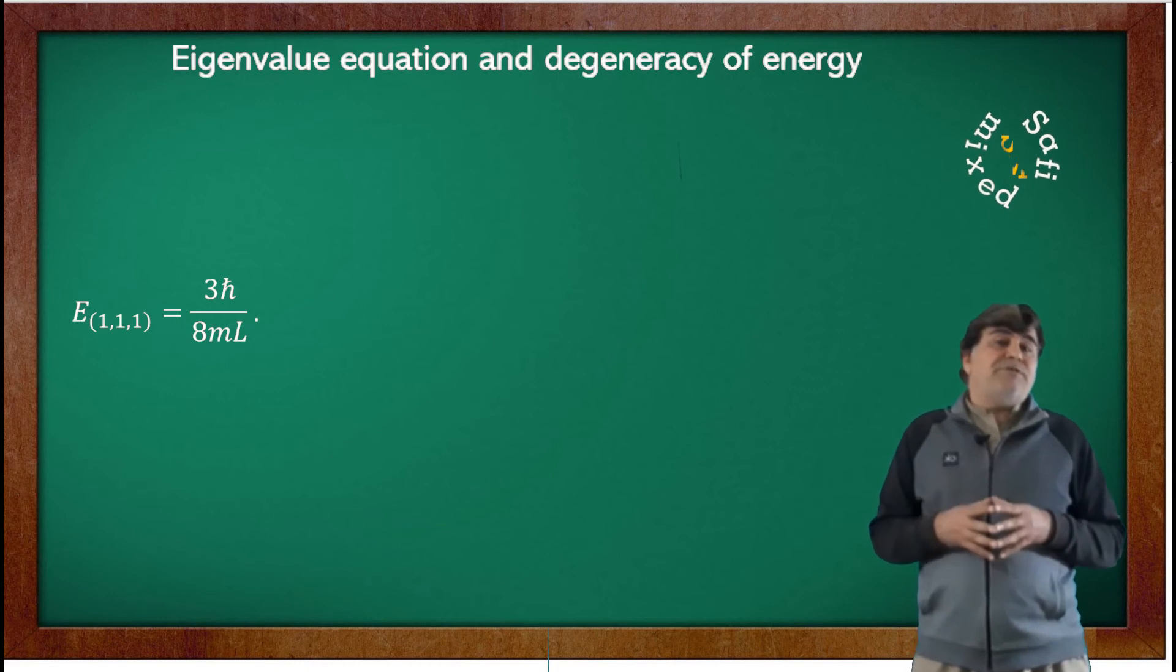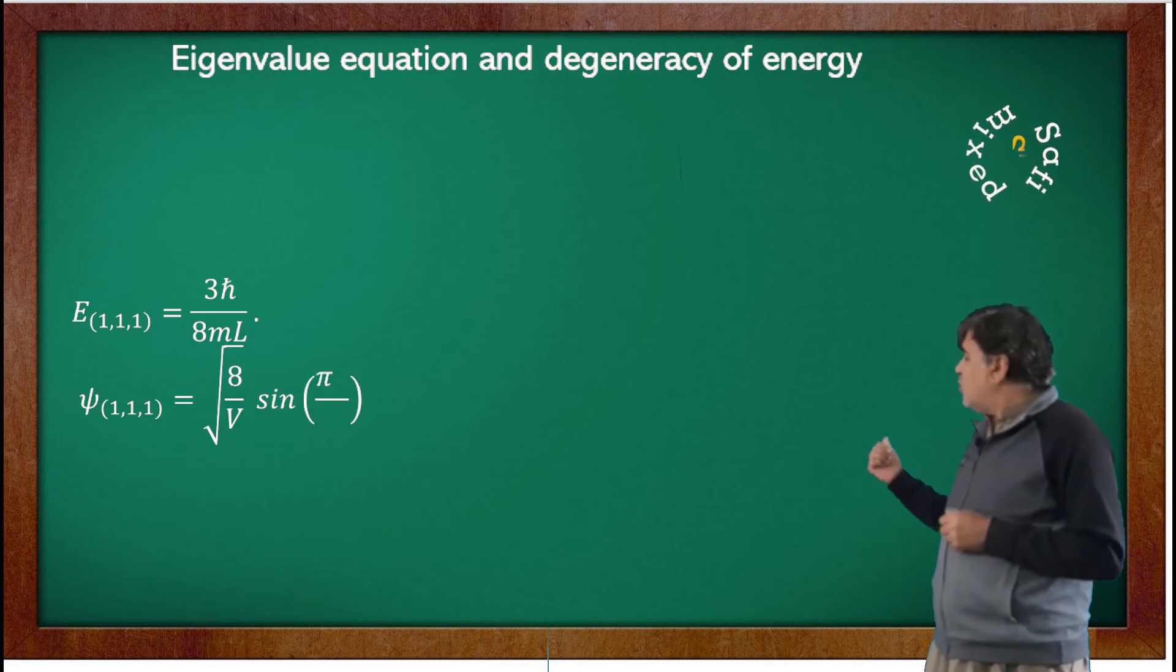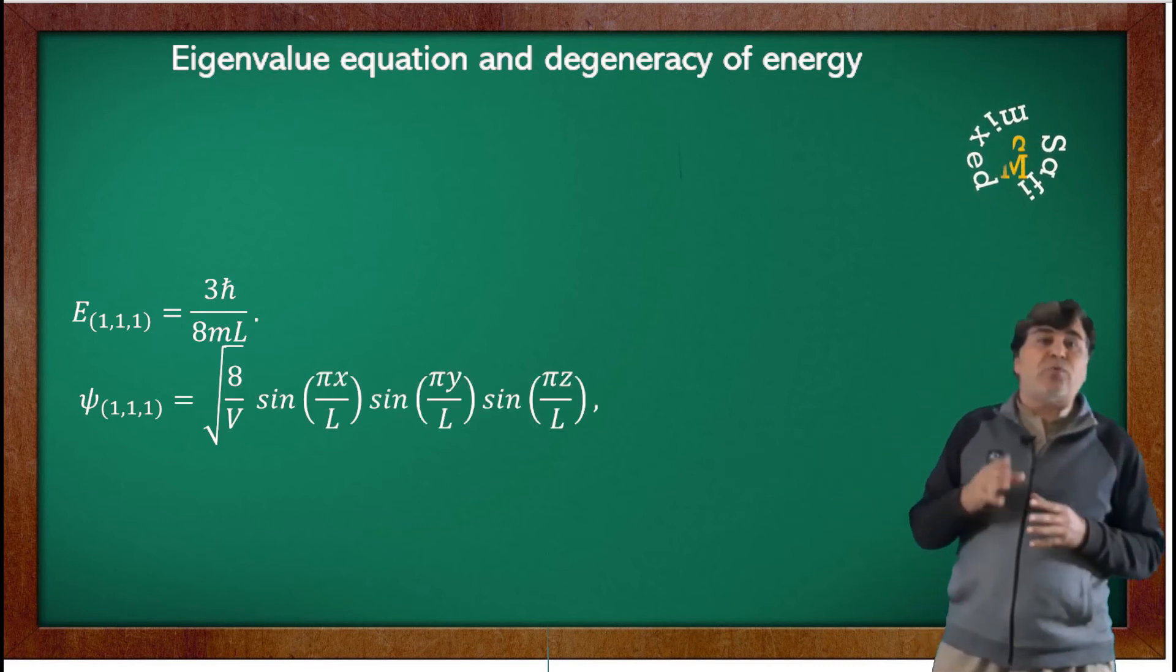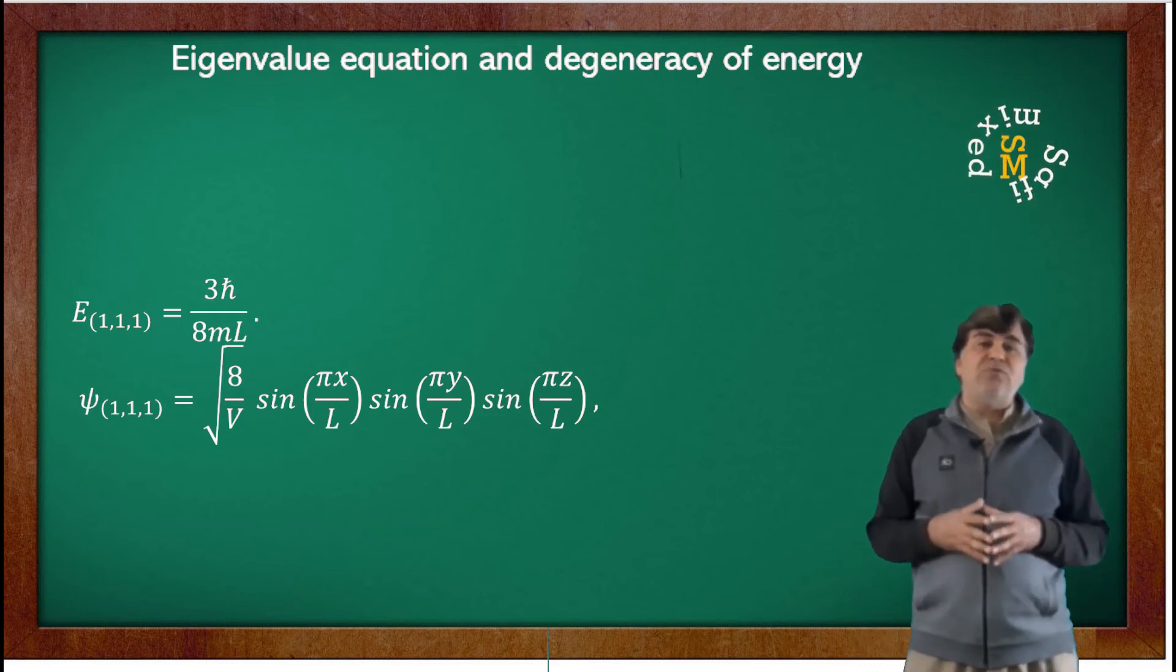And the corresponding wave function for this set of quantum numbers can be expressed as ψ_{1,1,1} equals that relation where we have substituted n_x, n_y, and n_z equal to 1.